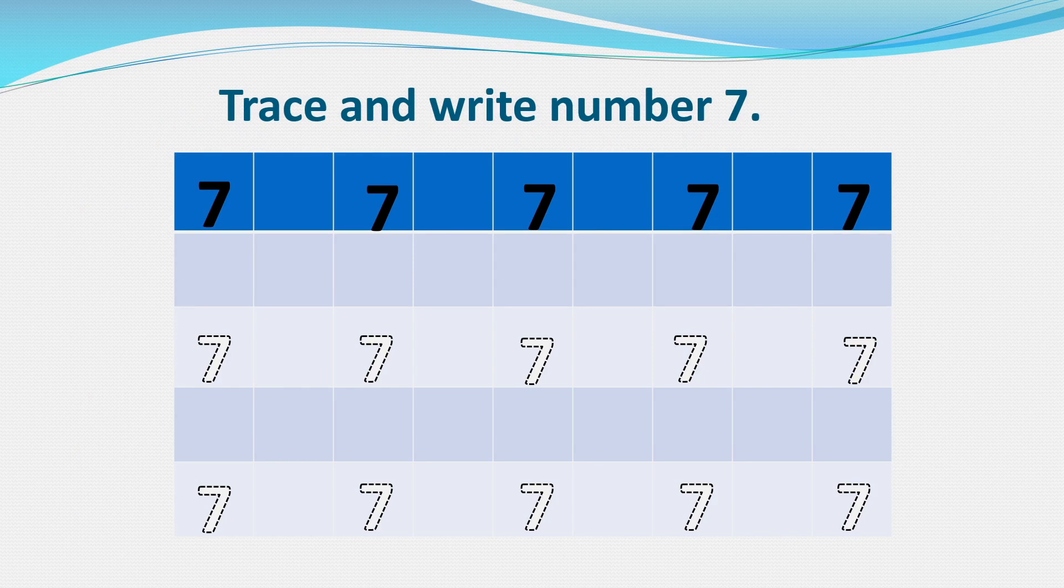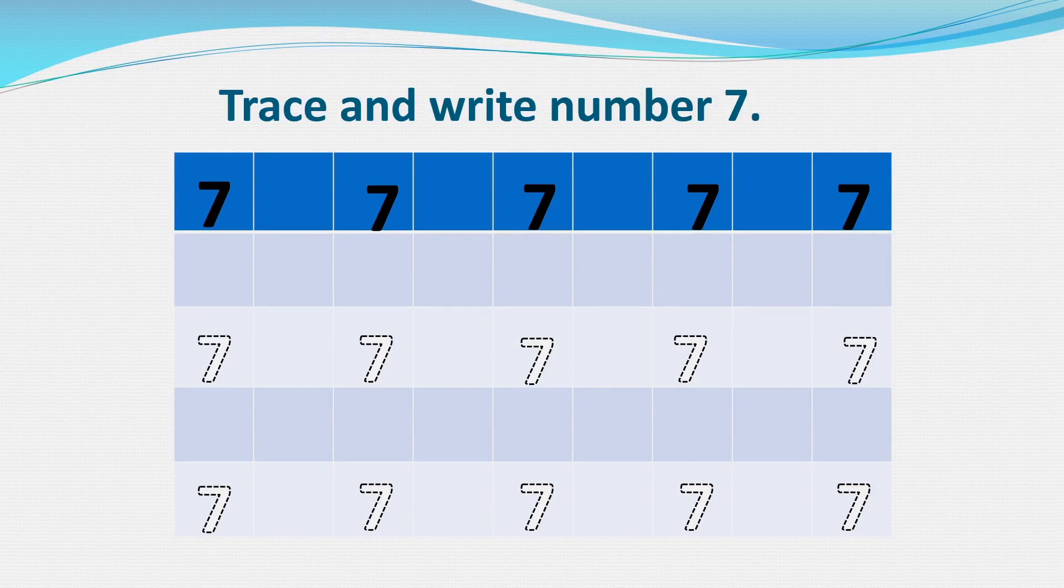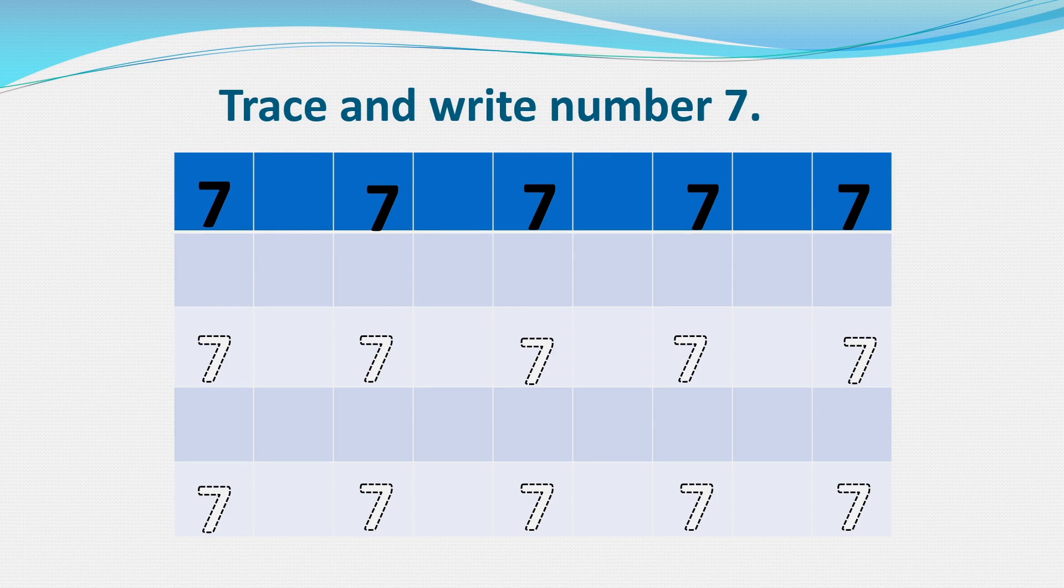Now, here we will learn how to trace and write number seven. So in order to write number seven, we make a sleeping line on the top and then a slanting line downwards.